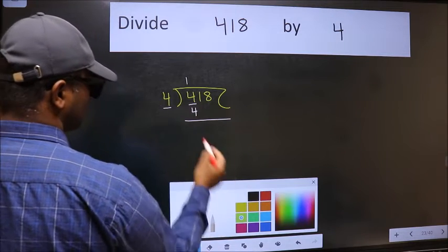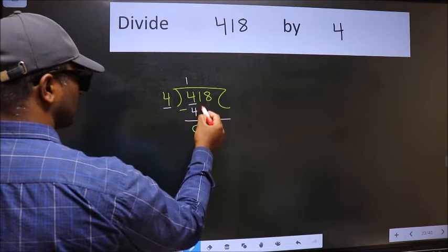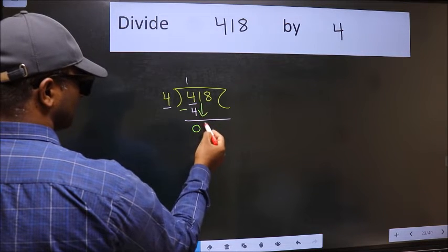Now we should subtract. We get 0. After this, bring down the number beside it. So bring 1 down.